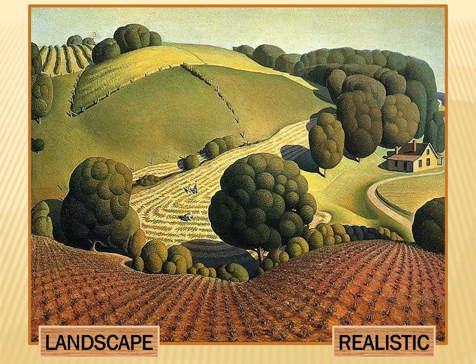Go ahead and show me with your fingers how many people are working in the cornfield. Yes, we can count three people. Now let's find the broccoli trees. Do you think the trees really looked like this? No — Grant chose to make patterns in the trees to decorate this landscape. Do they look realistic? No, they don't. Grant didn't want to paint this to look like a photo — 'Anyone can do that,' he said. It was a style all his own.